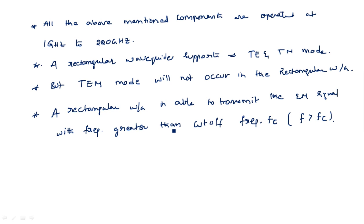We have already discussed that TE and TM modes are supported by waveguides, but TM mode does not exist in this rectangular waveguide. The reason why TM mode does not exist will be explained mathematically when we go into the wave equation for propagation of waves in TE and TM modes. From that wave equation you can understand which type of mode exists and which does not in the rectangular waveguide.